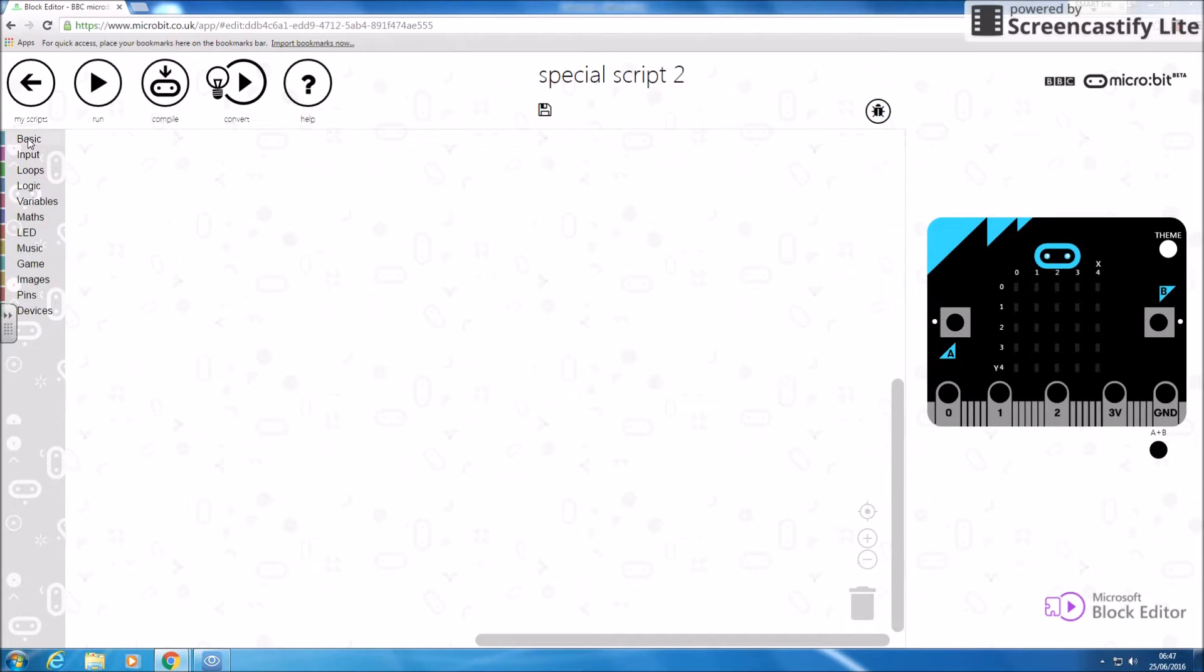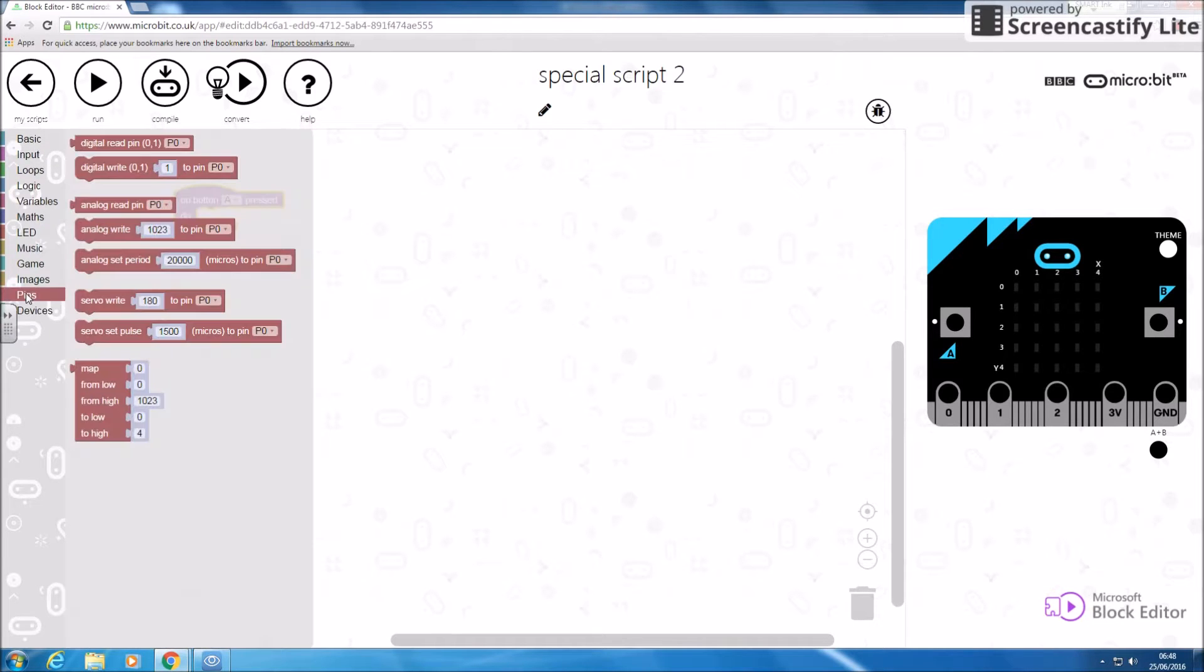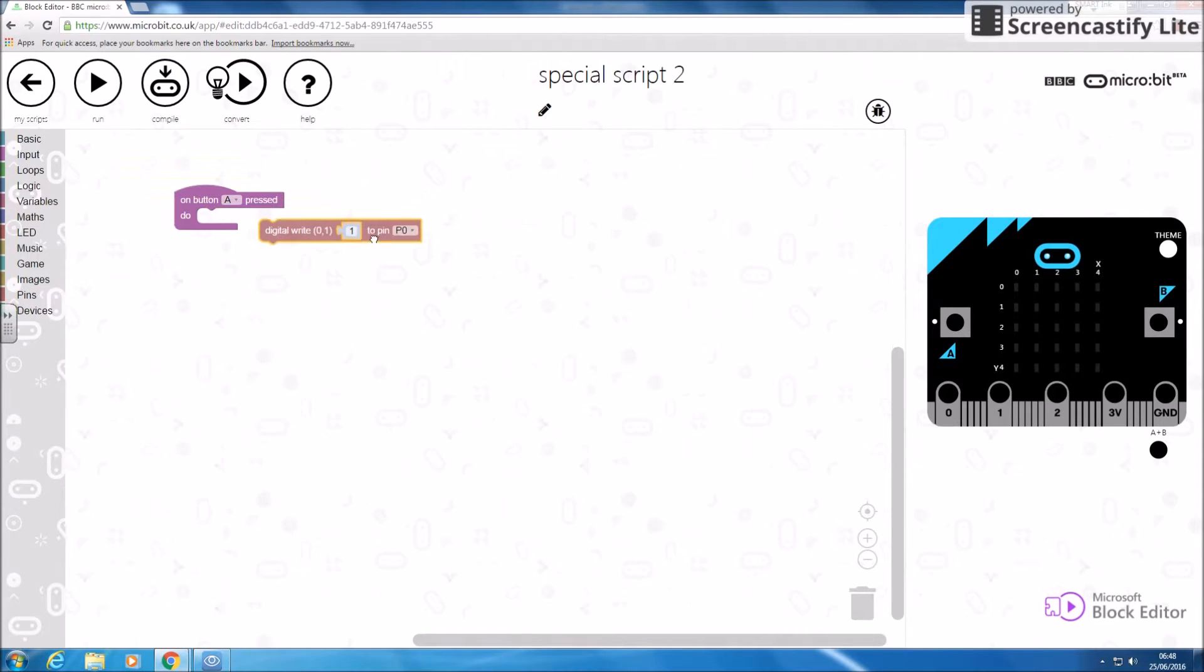I'm going to put an input, I'm going to have button A pressed, and I'm going to say on my pins digital write and then that pin. So that's going to say digital write zero. That tells us we can have pin zero, so that's going to turn pin zero on.